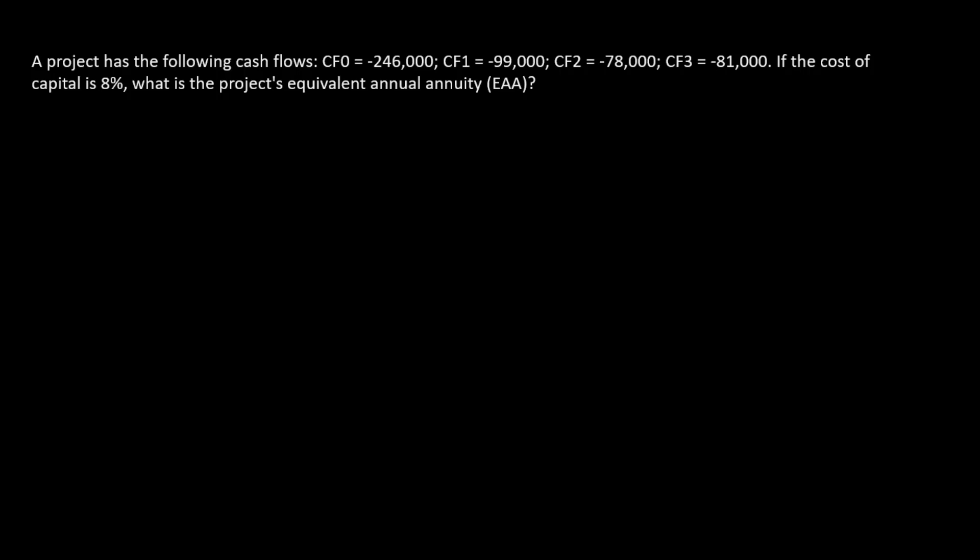Here we need to calculate this thing we're calling an Equivalent Annual Annuity, or an EAA. Recall the definition of the EAA is an annuity payment that generates the same NPV as the project in question.